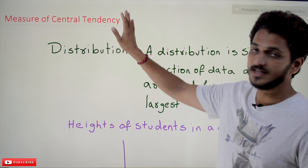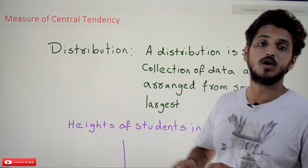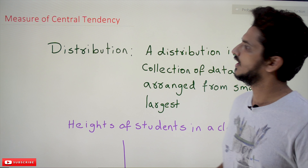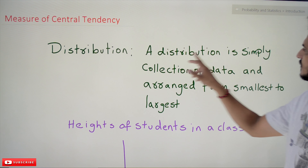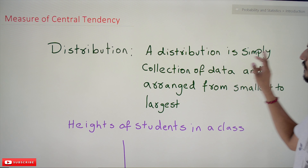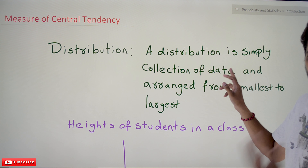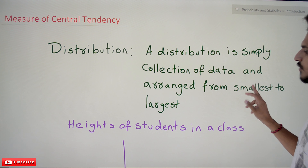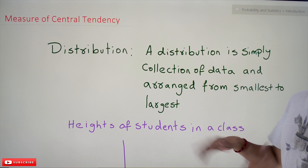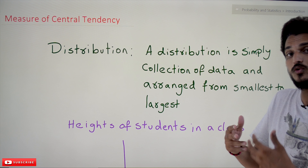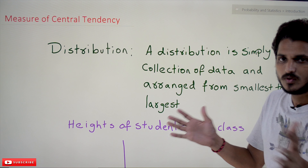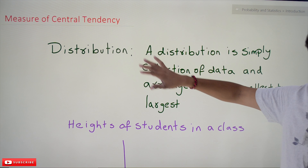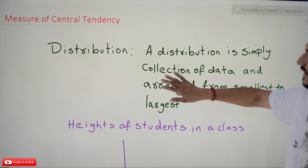Before going into the concept of measure of central tendency, first you have to understand what distribution means. Distribution is simply a collection of data. We are going to collect some data and arrange it from smallest to largest in a sequence order — that is what distribution means.